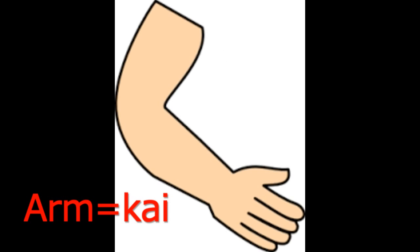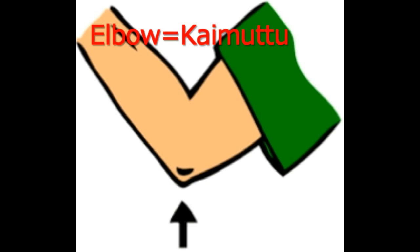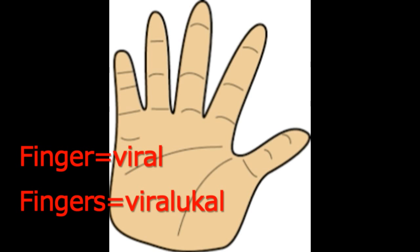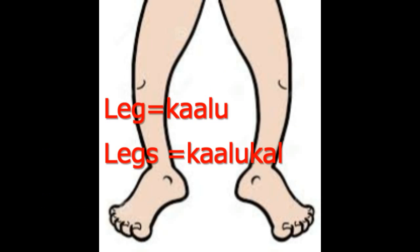Arm is Kay — arm and hand in common is Kay. Elbow is Kay Muttu. Finger is Viral, and fingers are Viralugal. To specify fingers of the hand, you say Kay Viralugal. Leg is Kalu.